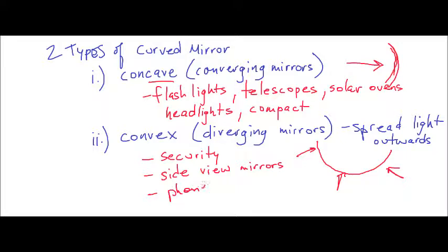Some phones that only have a rear camera include a small convex-style mirror that allows you to take your own portrait. We're going to look at these types of mirrors and try to draw ray-light diagrams for them.